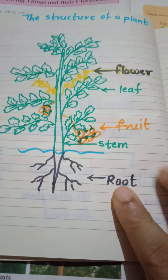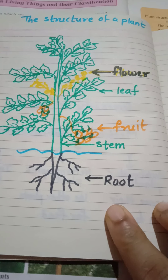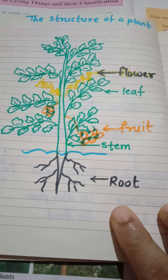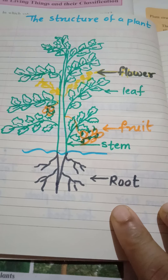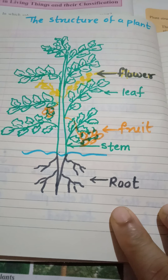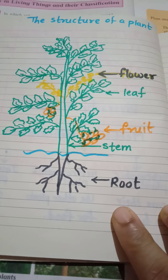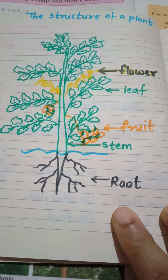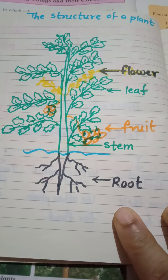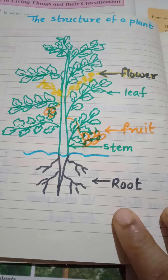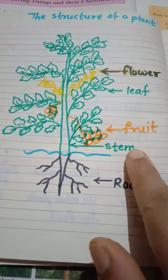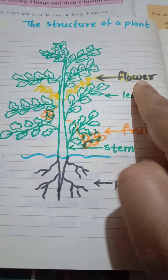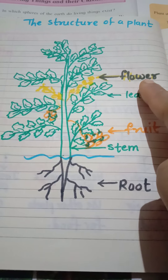Hello students, today we are going to study about the structure of a plant. In this we are going to see the different parts of the plant: root, stem, fruit, leaf, flower and their functions.